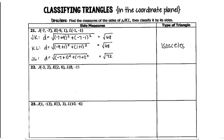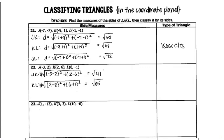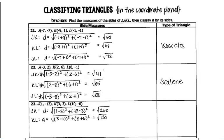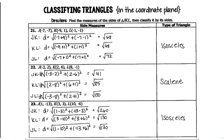For number 22, plug into the distance formula. You get the square root of 41, the square root of 85, and the square root of 130. That's scalene because none of them are the same. And then the last one, number 23: plug into the distance formula and you get the square root of 260, the square root of 130, and the square root of 130. Because two of them are the same, we have another isosceles.